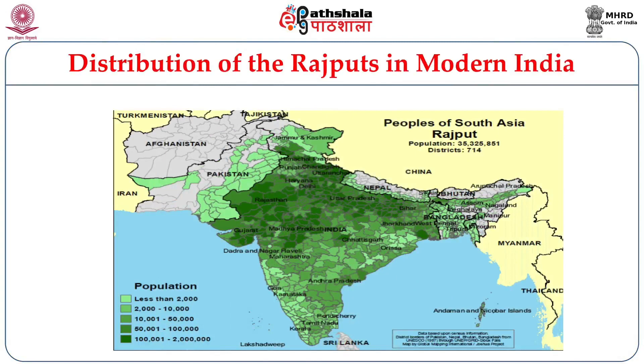This emergence was connected with other historical processes such as agrarian expansion in an area and an increase of settlements. In this map you can see the distribution of the Rajputs in modern India. The greener parts represent areas dominated by Rajputs, located more in the western and central parts of India — Gujarat, Rajasthan, the western part of Madhya Pradesh — and much less in the southern and eastern parts.